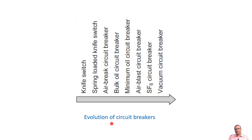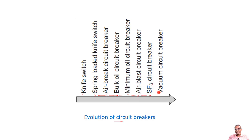The evolution of the circuit breaker proceeded as follows: from knife switch to spring-loaded knife switch, then to air circuit breaker, then to bulk oil circuit breaker, then to minimum oil circuit breaker, then to air blast circuit breaker, then to SF6 circuit breaker, and finally to the vacuum circuit breaker. We will see how the medium and the mechanism of operation play important roles in each type.